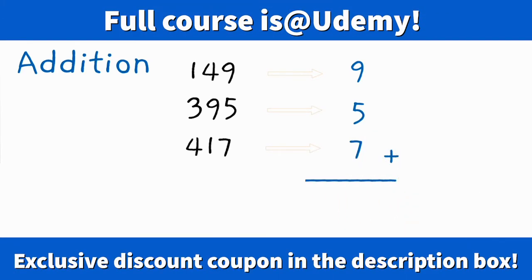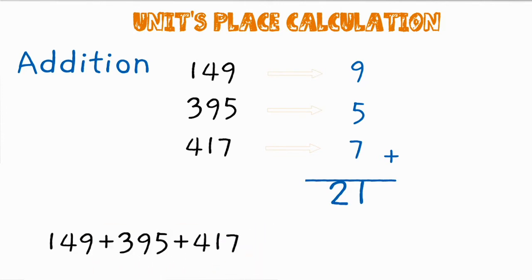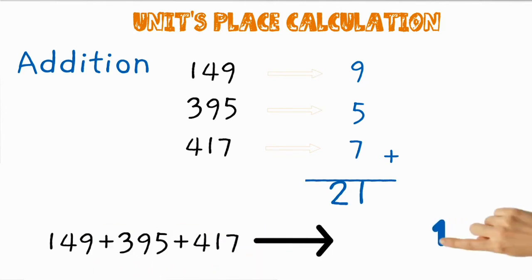Get the summation of these separated values. It is 21. In 21, again identify the units place value, that is 1, which is the units place value of the summation of the given three numbers.